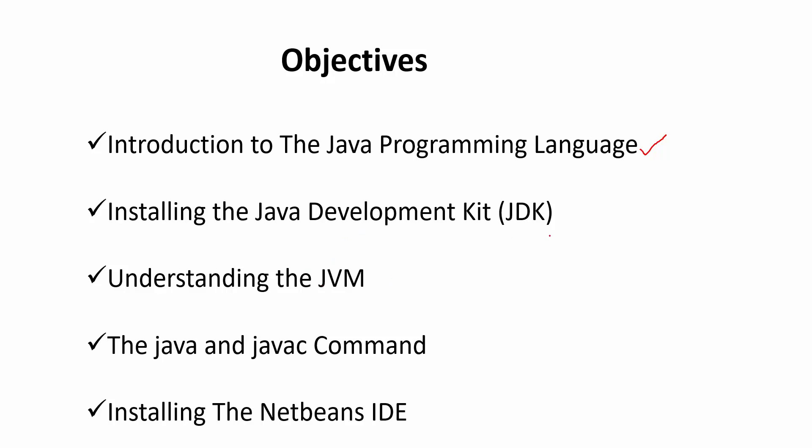We're also going to be installing what we call the JDK — the Java Development Kit. You cannot develop with Java if you don't have the development kit. Installing the JDK is what makes the JVM exist on your PC, along with the runtime environment needed to compile and run Java code. We'll look at that installation, and then we'll be understanding what the JVM really is. Java is platform independent, and the technology at the center of that is what we call the JVM.